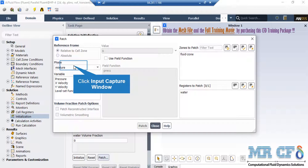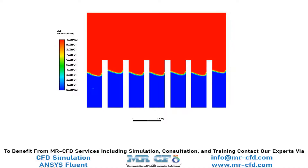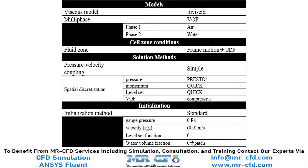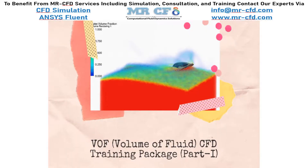After defining the region where water exists in the computational domain, click the patch button. In the appeared window, under the phase section, select water and set the volume fraction to 1. Then under registers to patch, select the water region and click patch. You can now see the contours of air volume fraction at the final time step. Finally, the summary of all settings is presented in the slide. Obtain the mesh file and full training movie by purchasing this product.